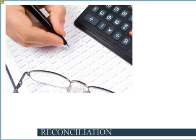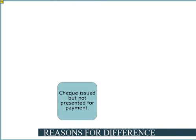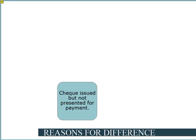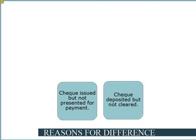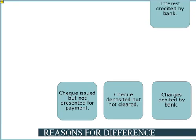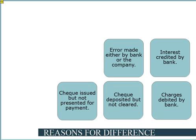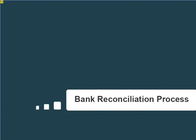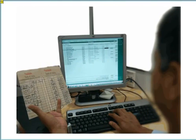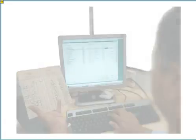It is necessary that the company bank balance and book balance should match, but there might be differences between the two. The reasons for differences may be: checks issued but not presented for payment, checks deposited but not cleared, charges debited by bank, interest credited by bank, or errors made by either the bank or the company.